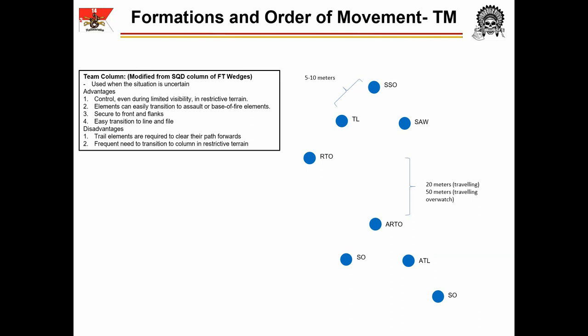There are four advantages to a team column of fireteam wedges. First, the TL has control of his element given his central position — he can maintain this control even in restrictive terrain as each member has visual contact with the soldier closest to them. However, in severely restricted terrain the team will have to collapse back into a file; this is done easily as the file and team column support each other by the placement of their personnel. Second, the elements of the column can easily transition to either base of fire or assault element in a react-to-contact drill followed by a squad attack, providing tactical versatility. Third, the column is secure to the front and flanks, with never fewer than four weapons that can immediately be oriented in any direction without fear of fratricide. Fourth, the team column easily transitions to file, and can also transition to line by the trail element moving to the right or left of the lead element to place the entire team online.